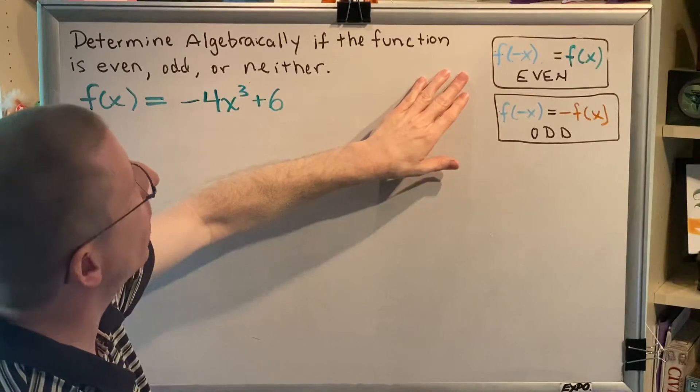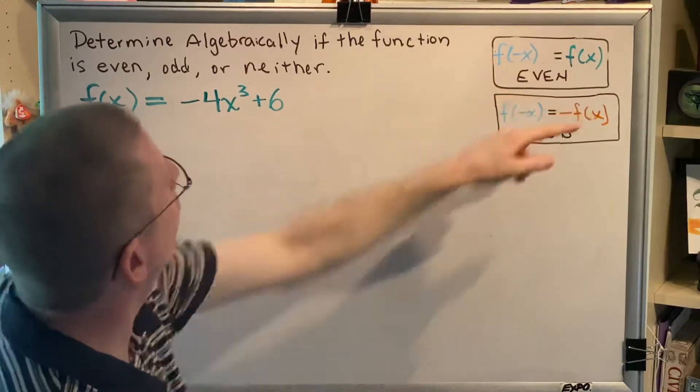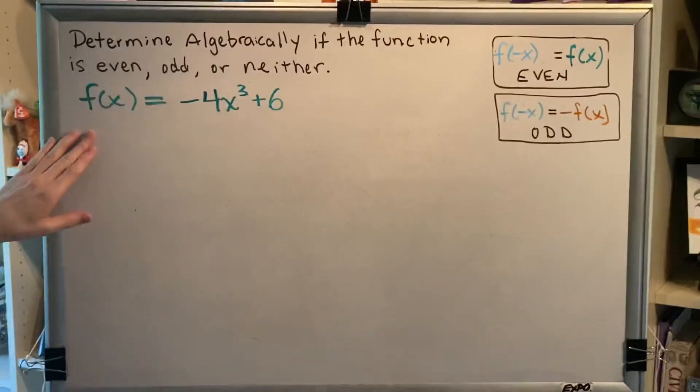And once again, note that these are color-coded: light blue, green, and orange. So the given information is f of x equals negative 4x cubed plus 6. This is shown in green.